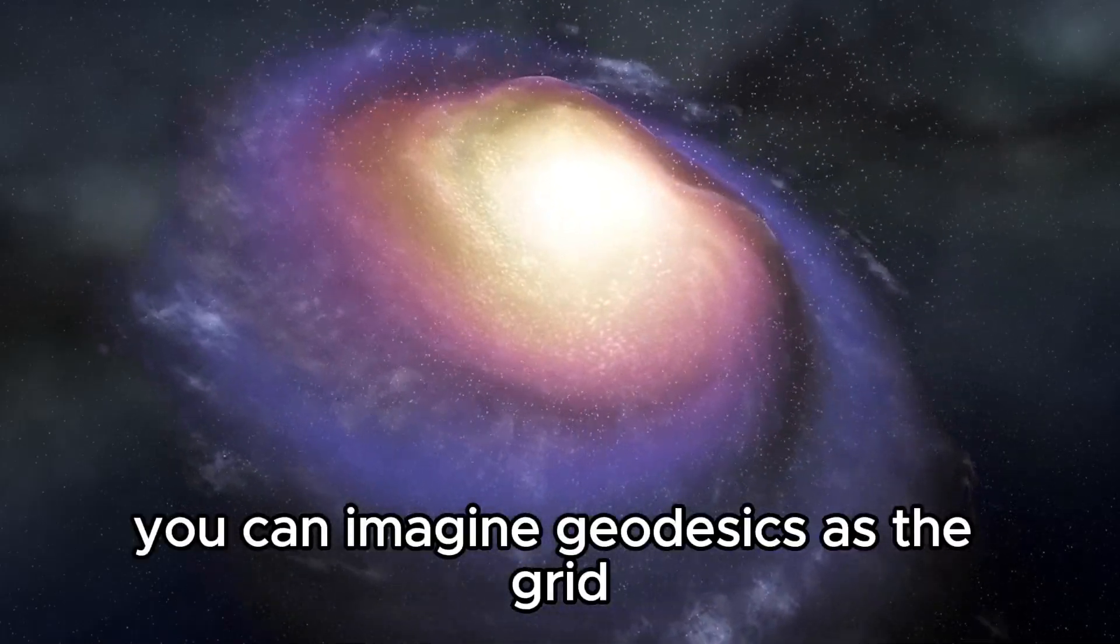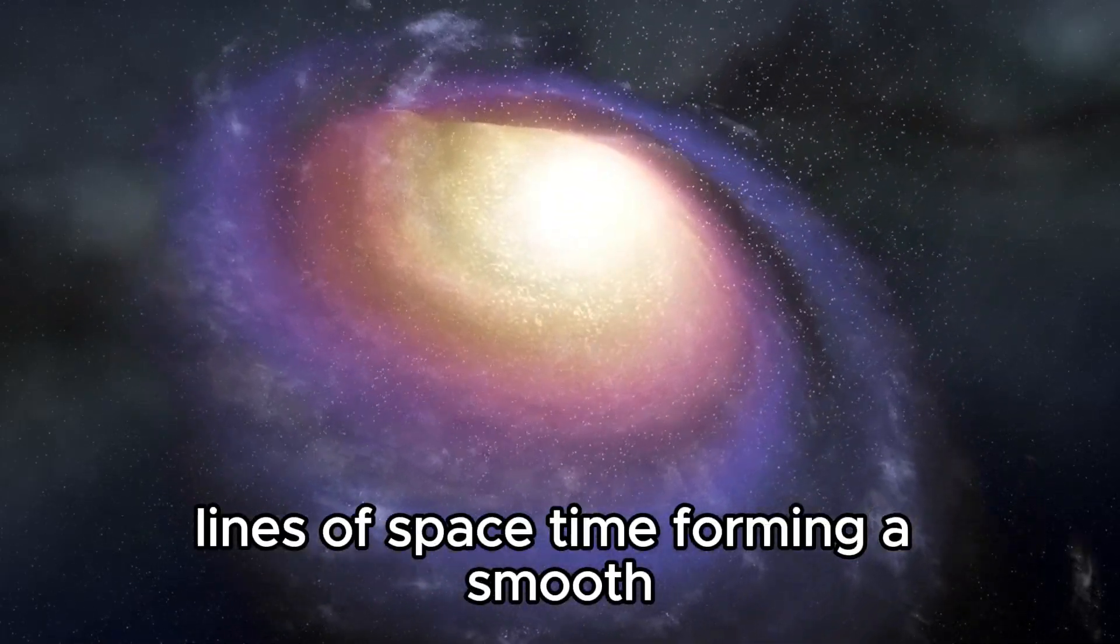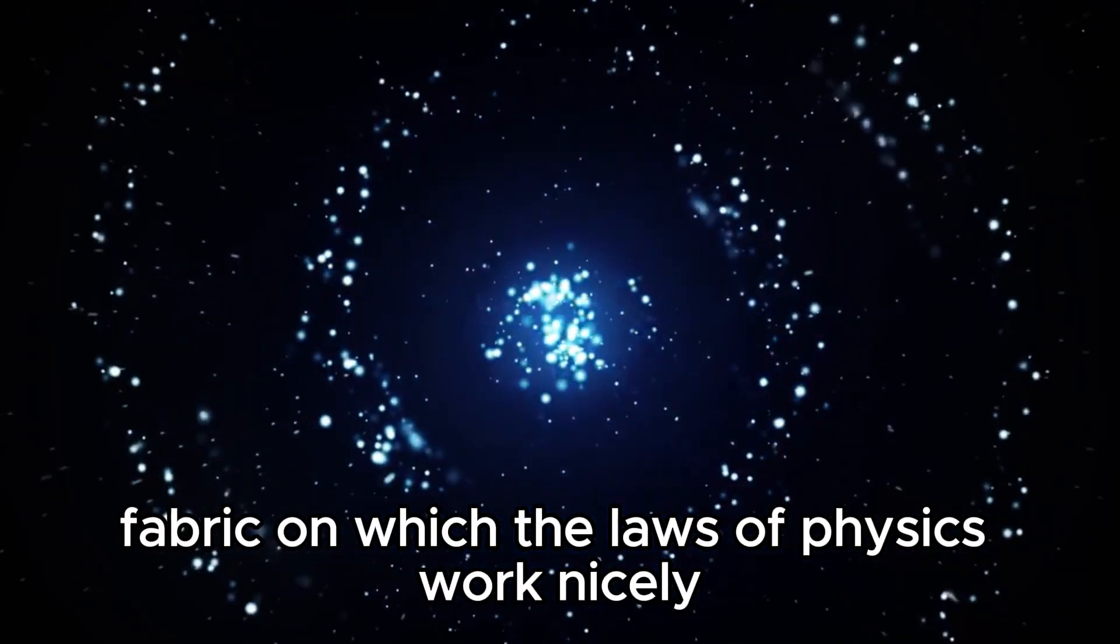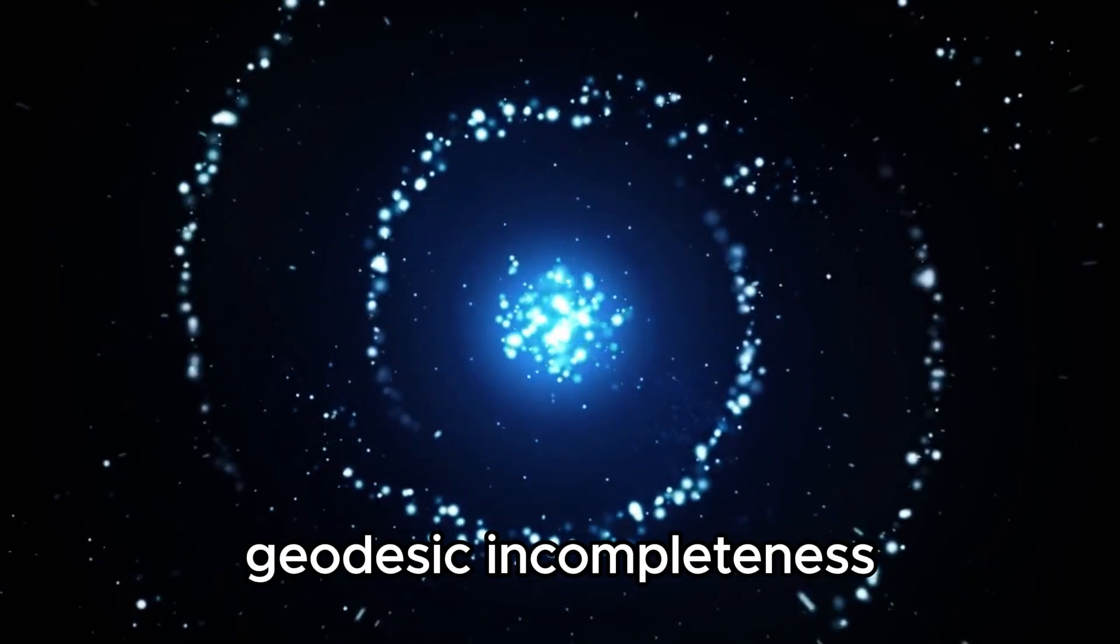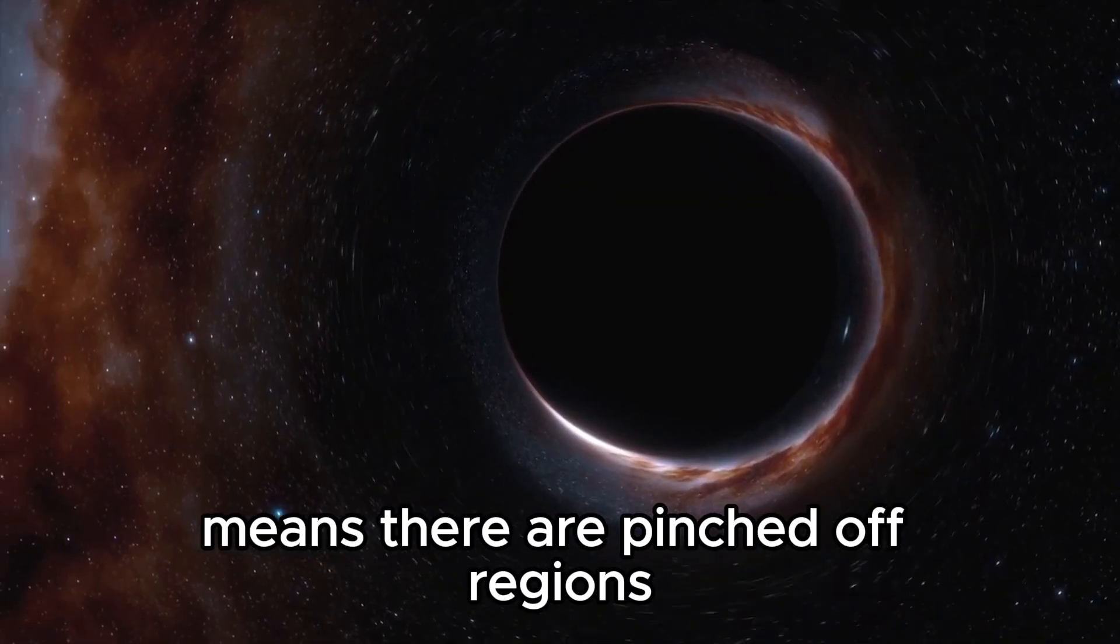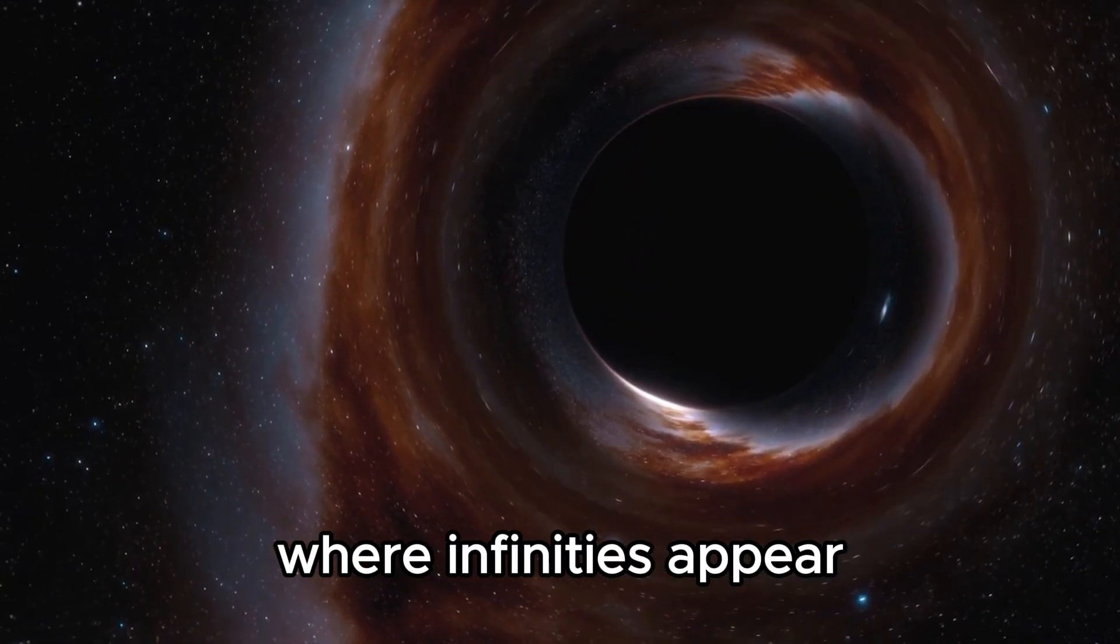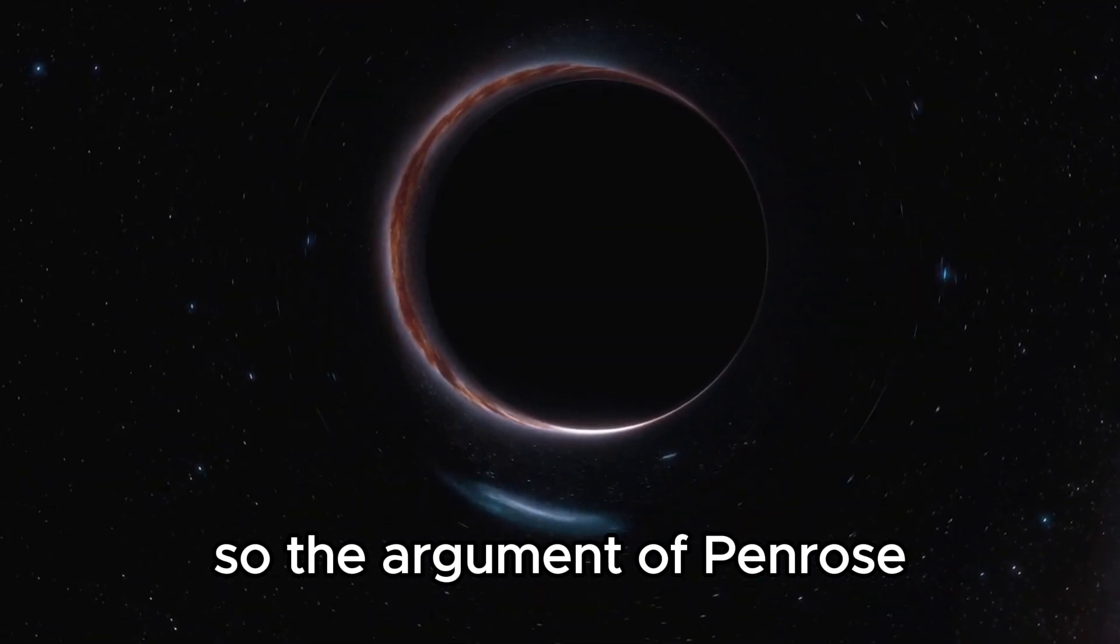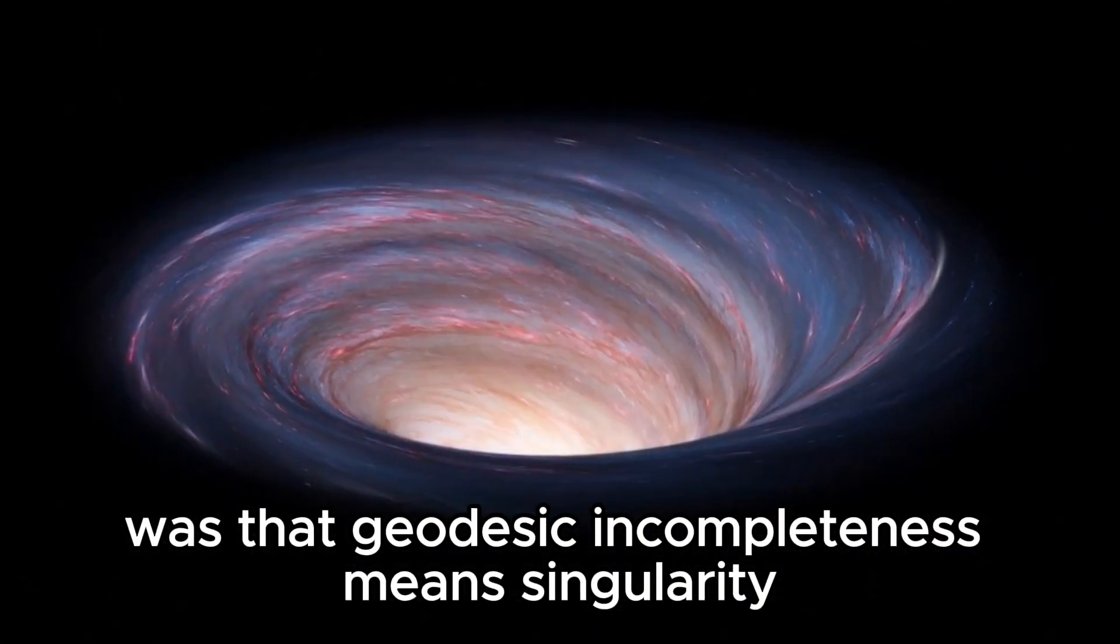You can imagine geodesics as the grid lines of space-time, forming a smooth, if sometimes quite warped, fabric on which the laws of physics work nicely. Geodesic incompleteness means there are pinched-off regions where infinities appear and the laws of physics break down. So the argument of Penrose was that geodesic incompleteness means singularity.